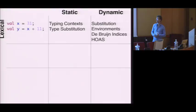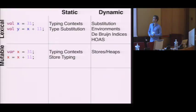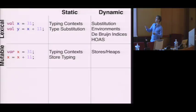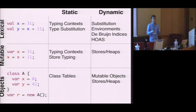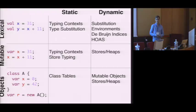If we turn our attention to mutable states, then once again we typically model static name binding by associating names with types, or possibly by associating memory locations with types. For the dynamic semantics, binding is modeled by tracking the state of the memory, for example using stores and heaps in semantic specifications. And if we have objects, in order to give semantics to binding, in the static semantics we use class tables that record which fields classes bind. At runtime, objects are typically represented as special kinds of values that have mutable fields that track the state of fields in the object.